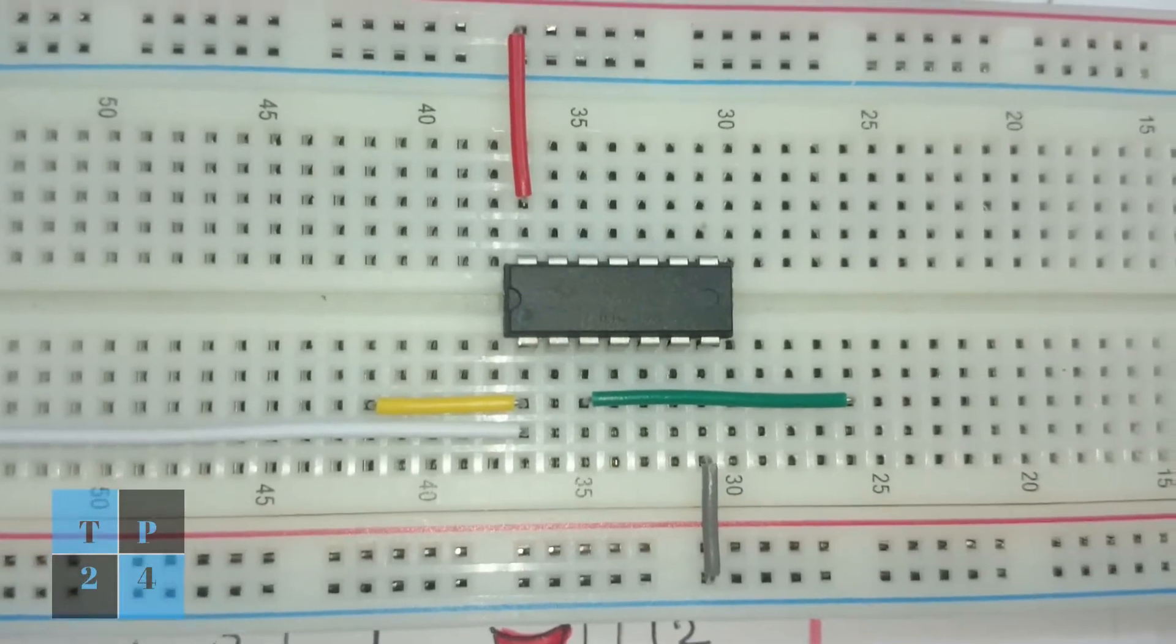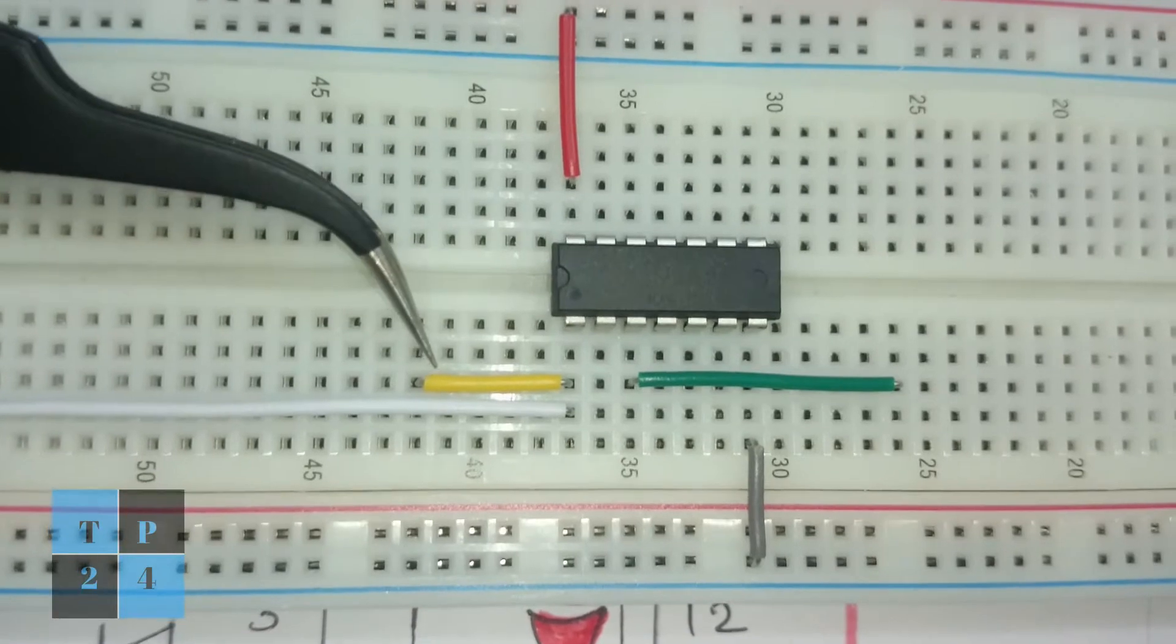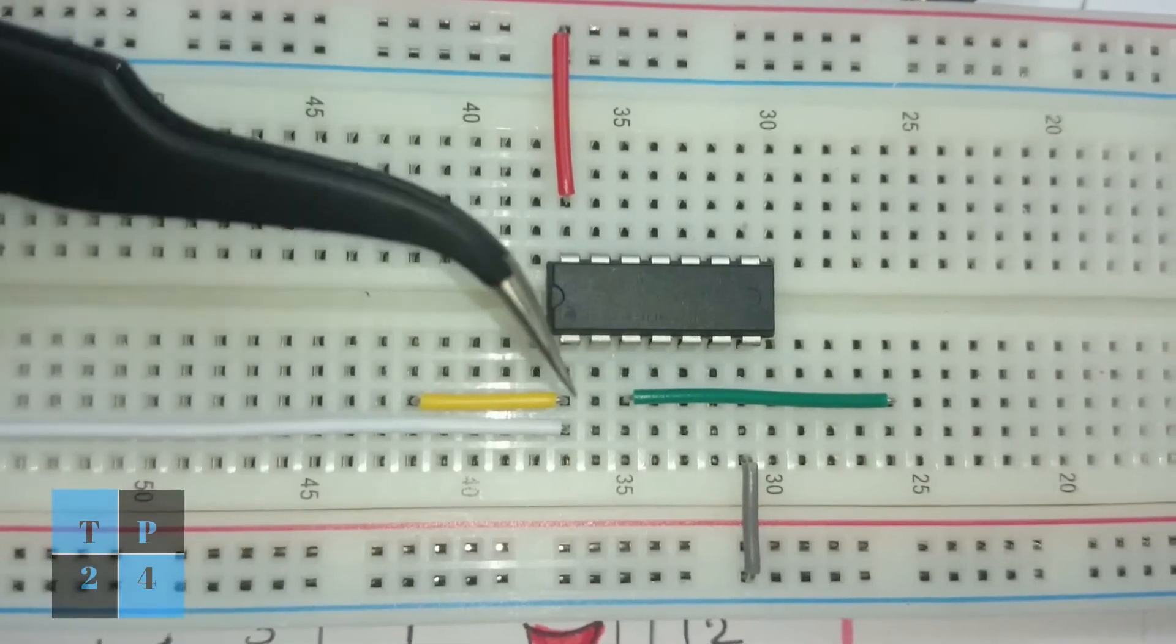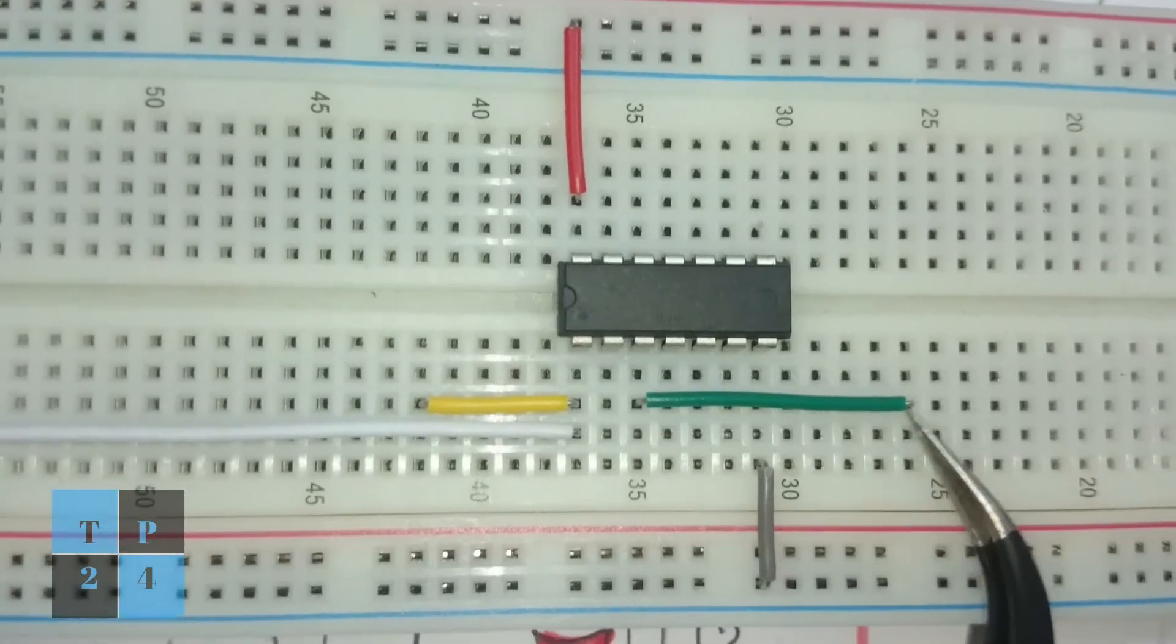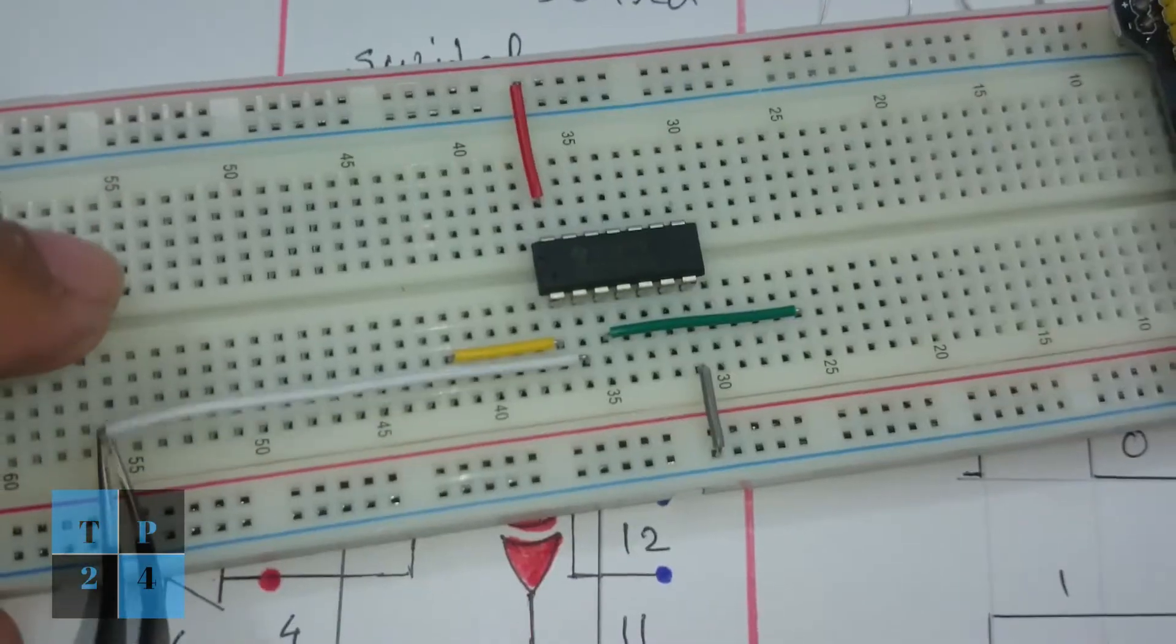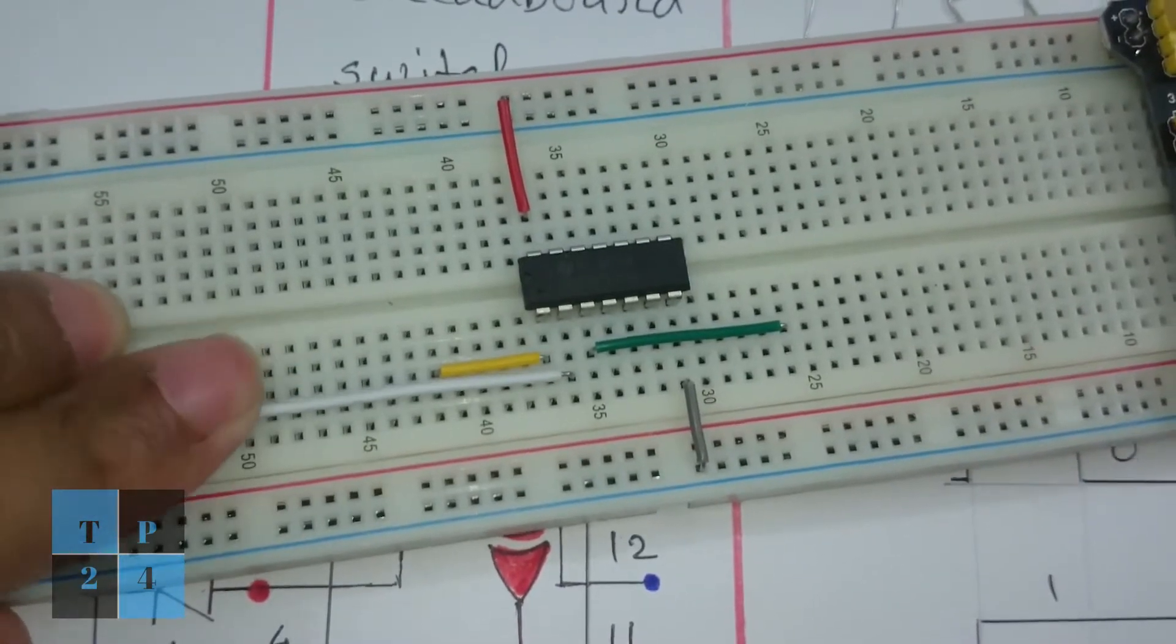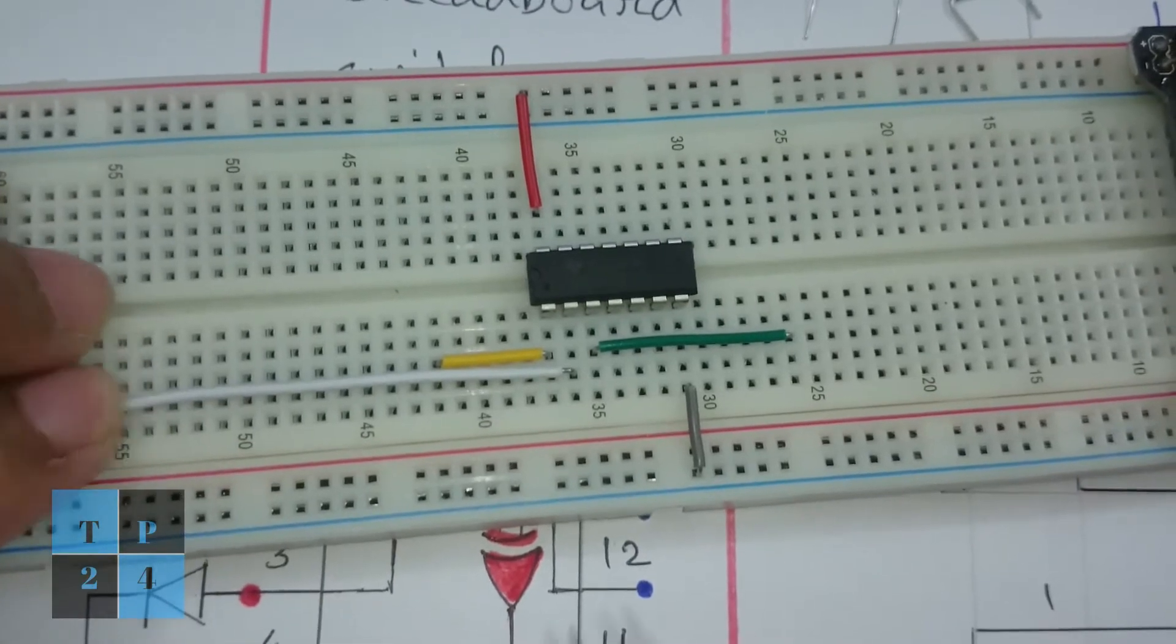And from pin number 1 I took a connection by yellow wire. And from pin number 3 I took a connection for output like this. And from pin number 2 I took another input connection.